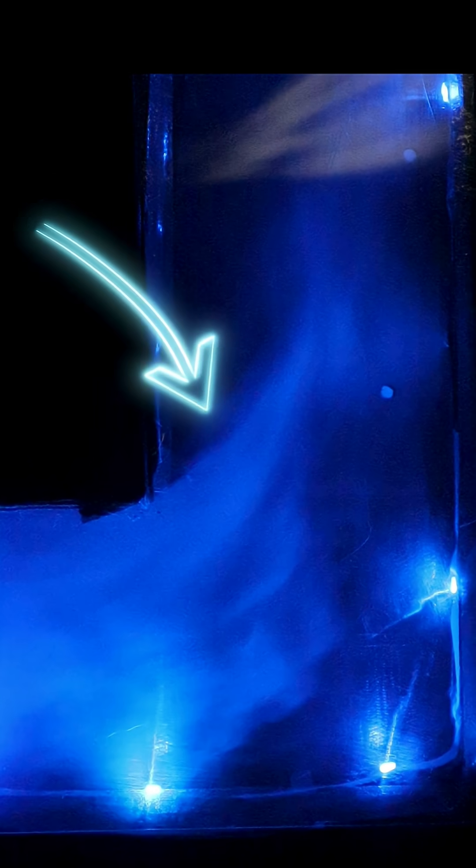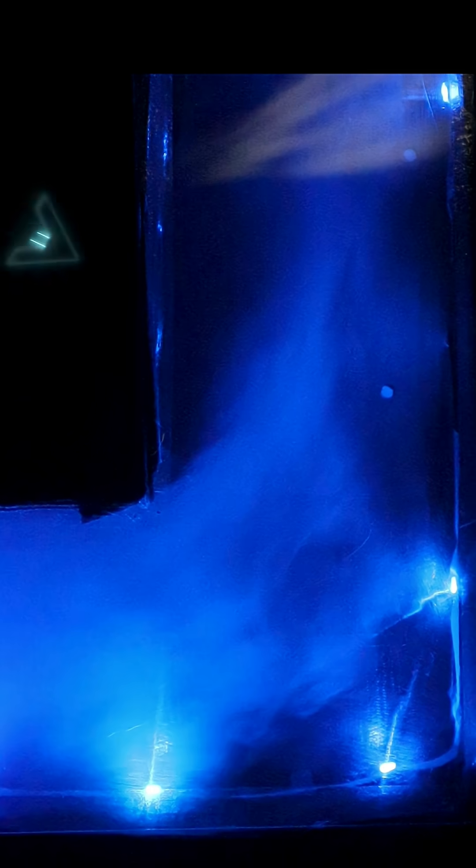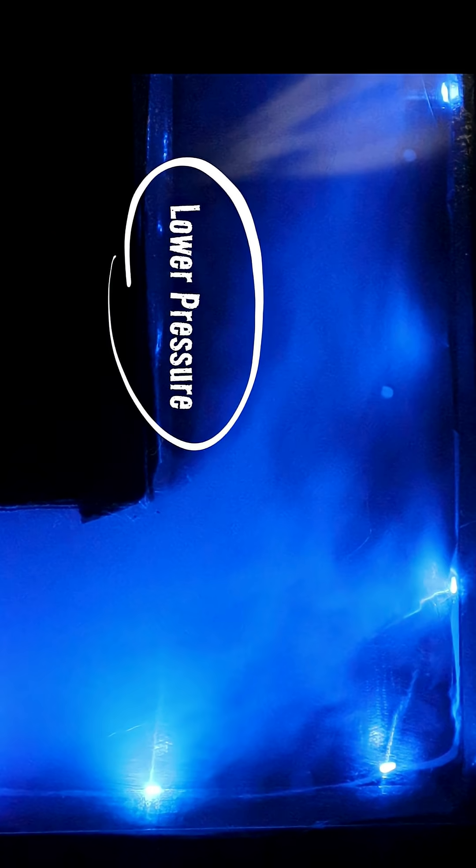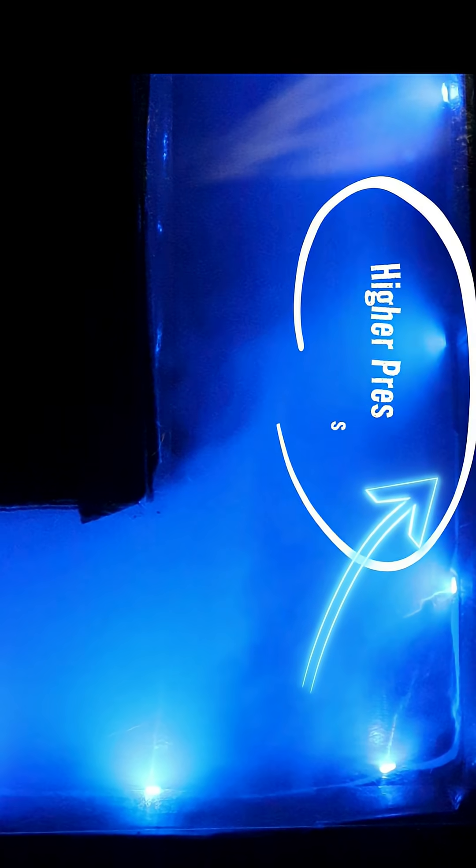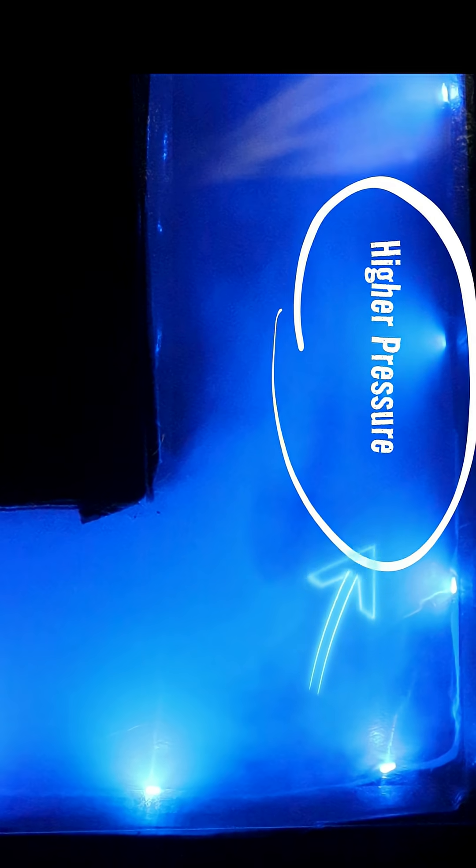...we can see static pressure in play. You can see as the air comes up it shears off on that inner corner, and that leads to a decrease in pressure in that little region right there. On the opposite side, on the top side of that 90, the air slams up against it and we have an increase in pressure there. So we have this big pressure differential across this elbow, and this creates the resistance that we can measure.